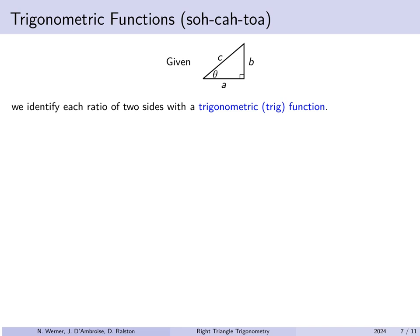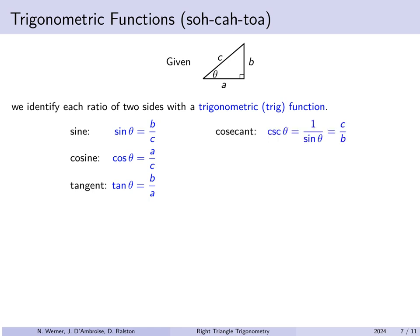We identify each of those ratios with a trigonometric function. The ratio b over c is called the sine of theta, a over c is the cosine, and b over a is the tangent. The reciprocals are: c over b is the cosecant, c over a is the secant, and a over b is the cotangent. Note the potential confusion: sine reciprocates to cosecant, and cosine reciprocates to secant. Tangent reciprocates to cotangent.